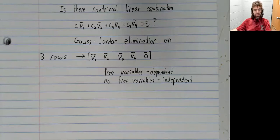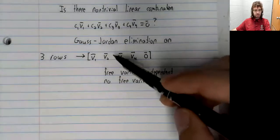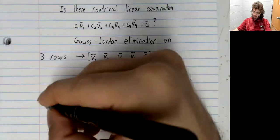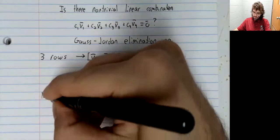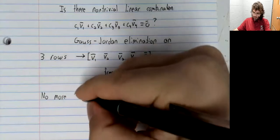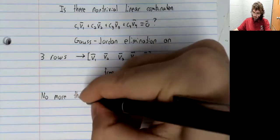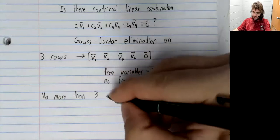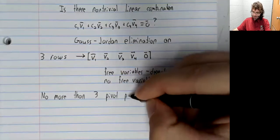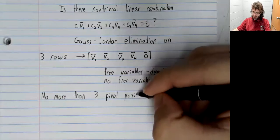So the fact that this matrix has three rows means we have no more than three pivot positions.